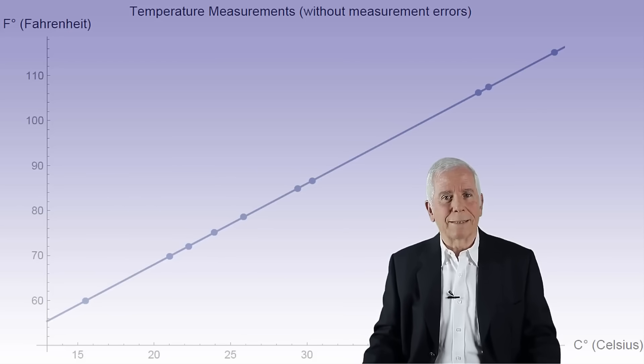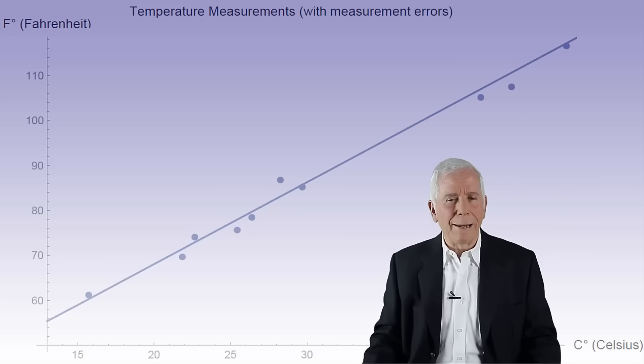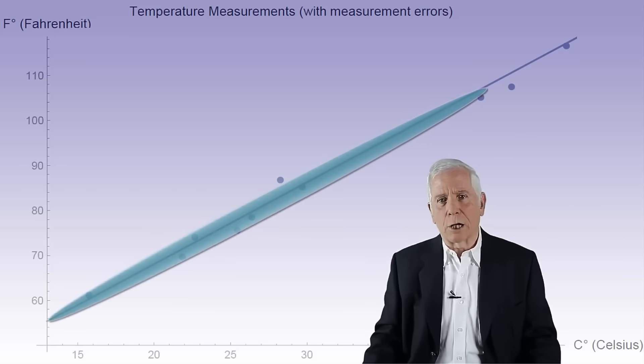In practice, each measurement or observation has an element of randomness and/or measurement error. Therefore, an actual sample of measurements would more likely look like this. In other words, the points now do not align exactly on a straight line but are close to one.